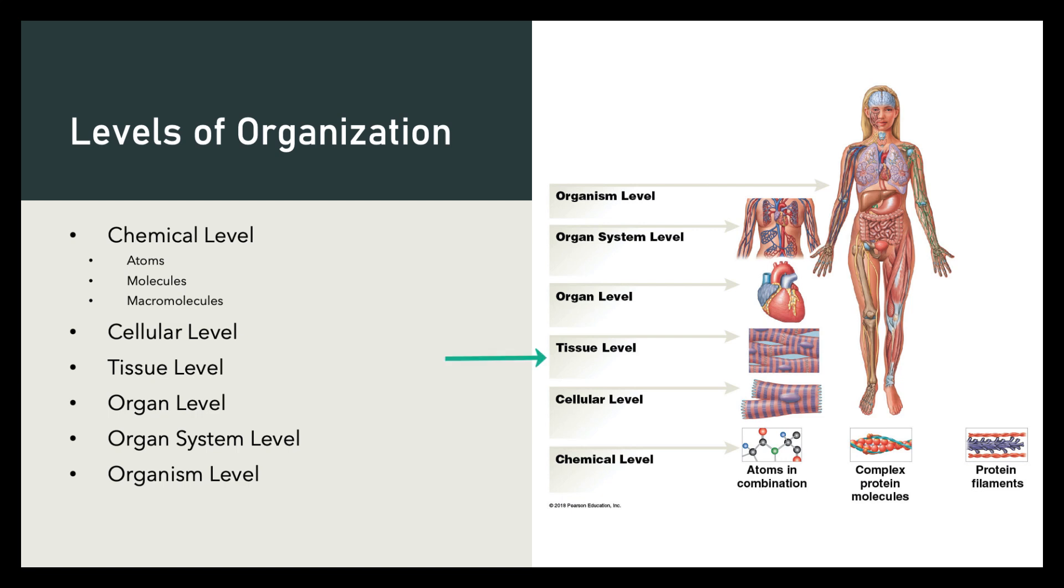Two or more types of cells form a tissue, which is the tissue level, and we're going to learn about that in chapter four. Two or more types of tissues forms an organ. Multiple organs working together form an organ system. There are 11 organ systems in the body, and we cover the first four organ systems in anatomy and physiology 1. The rest we'll cover in anatomy and physiology 2.